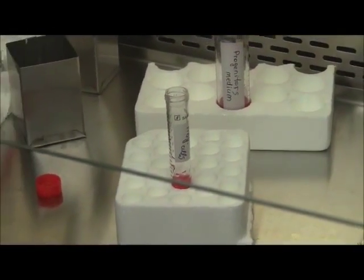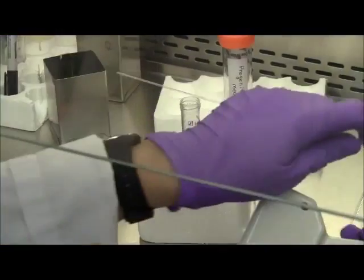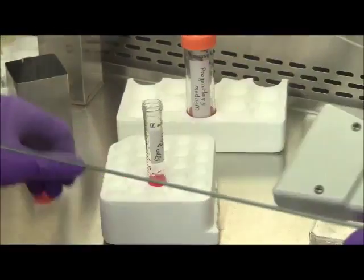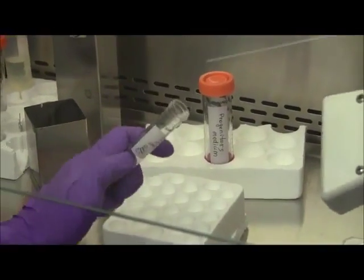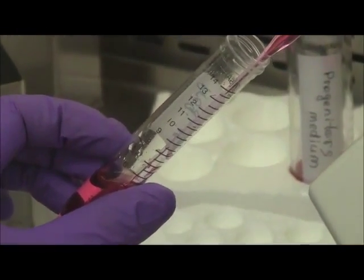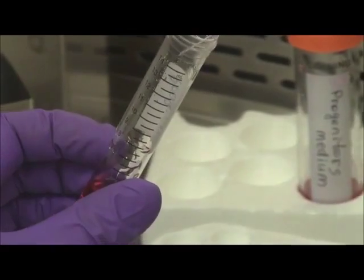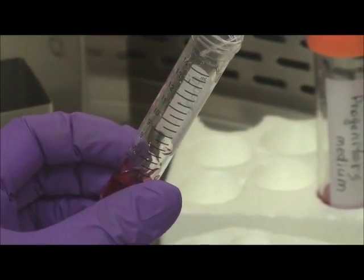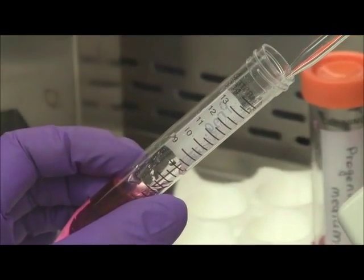Repeat trituration with another borosilicate pasteur pipette. Handmade, fire-polished pipettes have openings of different diameters. Using two pipettes will increase the chance of better cell separation in the suspension.